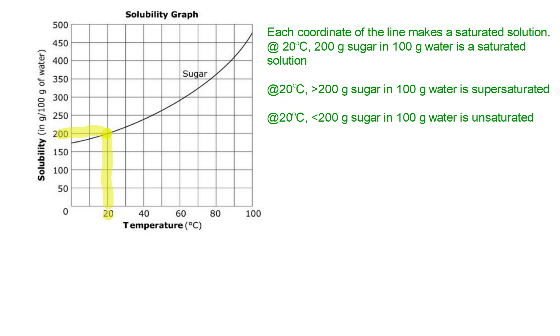This is a solubility graph, and so what this means is that every point on this line is a saturated solution. So at 20 degrees Celsius, I can dissolve 200 grams of sugar in 100 grams of water. That is the solubility of sugar at 20 degrees. And that gives me a saturated solution.